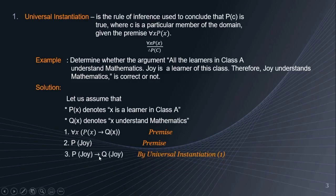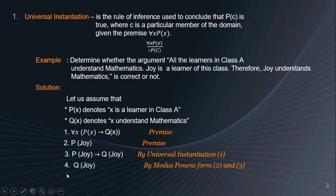Next, we have P(Joy) implies Q(Joy). This is done by universal instantiation from premise 1 — we replace x by Joy. Therefore, Q(Joy) is true, because it is done by modus ponens from premises 2 and 3. That is why this example is valid.